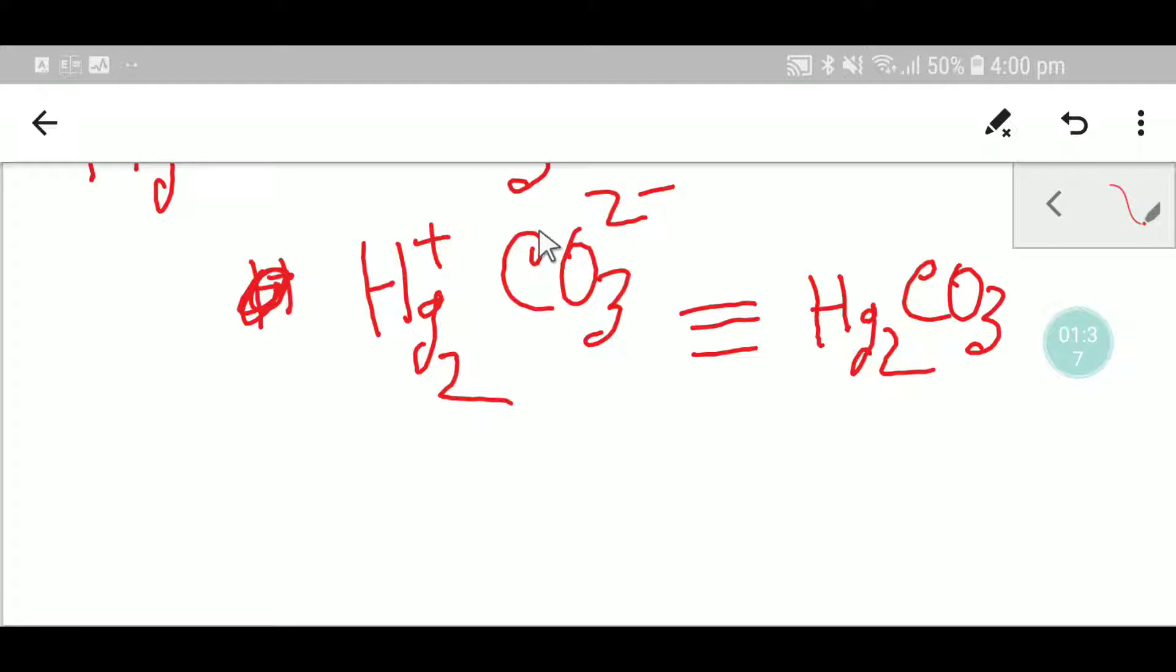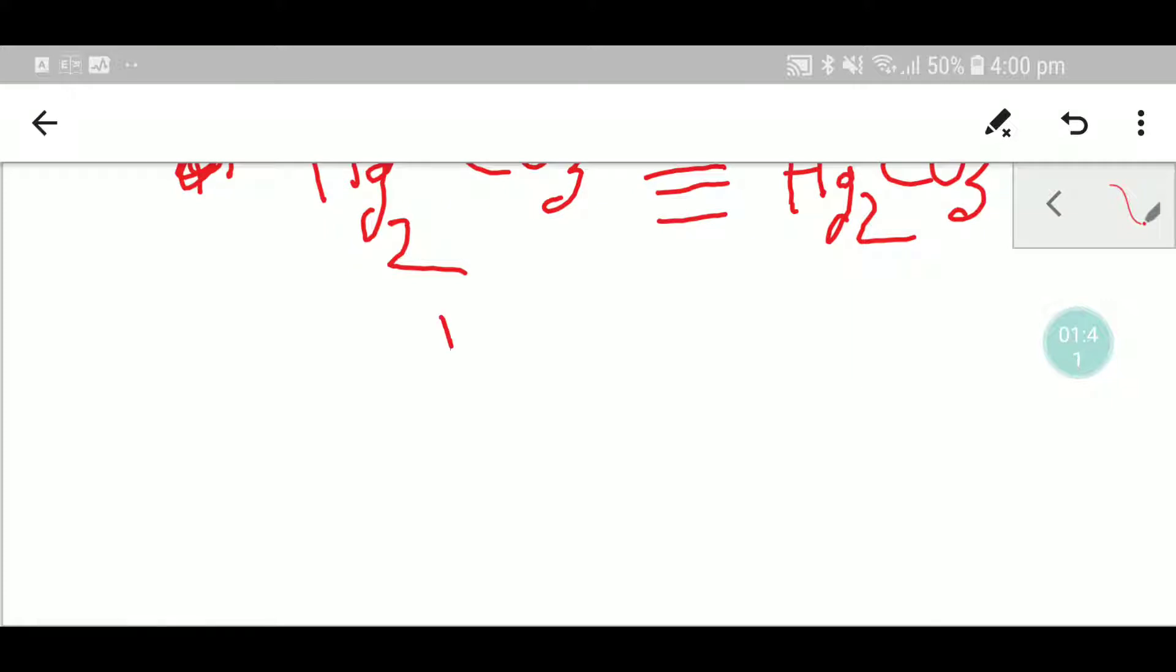Here you can apply, let me show you another way to write the formula for mercury carbonate by criss-cross method.